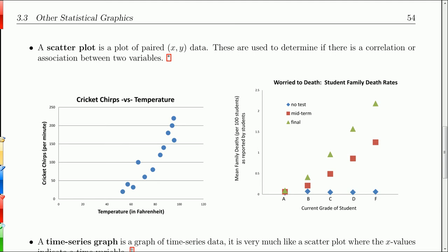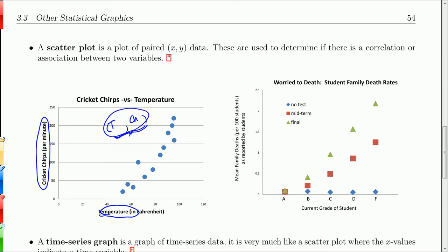We'll get into scatter plots in great detail in chapter 10. Here, we have temperature on the x-axis and cricket chirps per minute on the y-axis. Each one of these points represents two numbers: a temperature and a chirps per minute. When you tally up all these points for each temperature, there's a chirps per minute, and you plot them on a graph — that's a scatter plot. What you can see is that as temperature increases, the chirps per minute gets higher, which makes sense: it gets warmer, their little legs loosen up, and they can chirp faster.